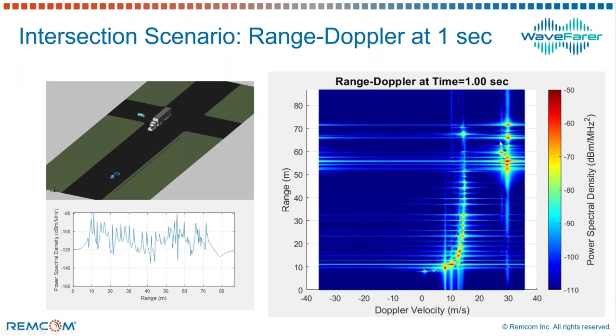As the radar advances, the truck is getting closer. And of course, we see some of those guardrails approaching and then passing and shifting down in Doppler as they pass.